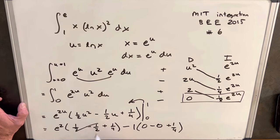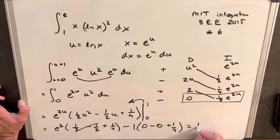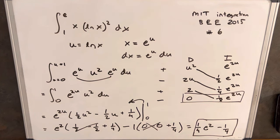You'll notice these halves will cancel here. And then we can write our final answer is going to be a quarter times e squared minus, this is just 0, so we'll just have minus a quarter. You could factor out a quarter if you want. I don't really care. But that's it. That's our solution. MIT Integration B 2015 problem number six. Thanks for watching.